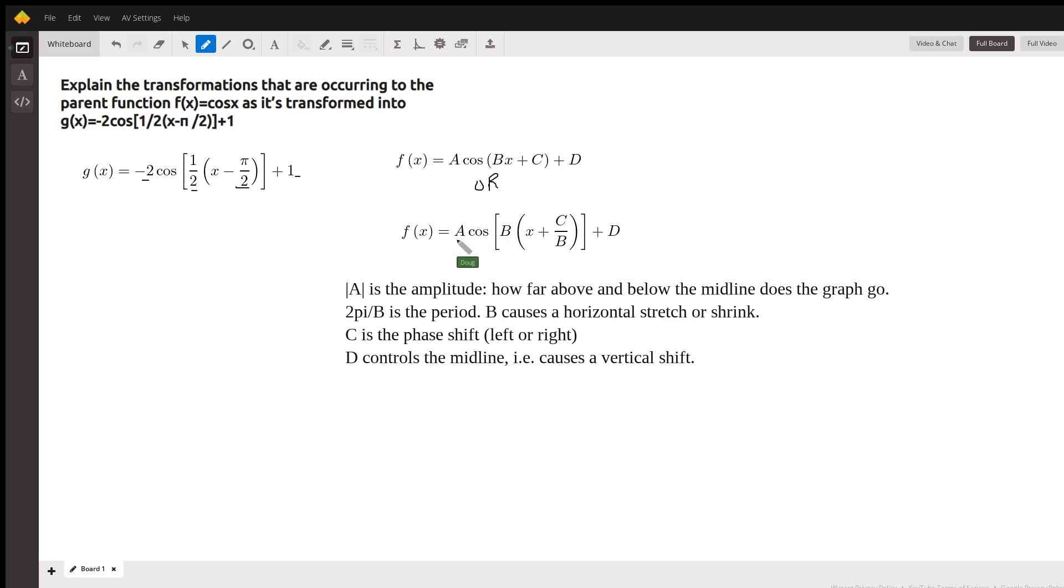A, the absolute value of A, controls the amplitude—how far above and below the midline does the graph go. The cosine and sine functions have a period of 2π, but if you introduce a number B in front, it will cause the period to either stretch out or shrink, and we'll see that in a second.